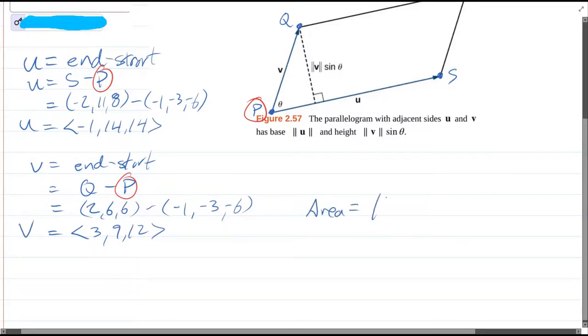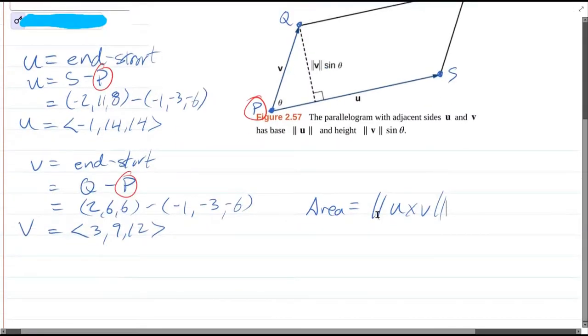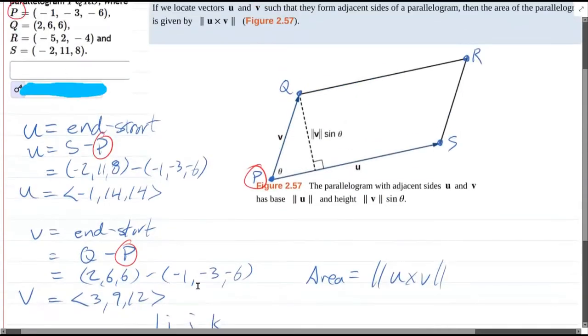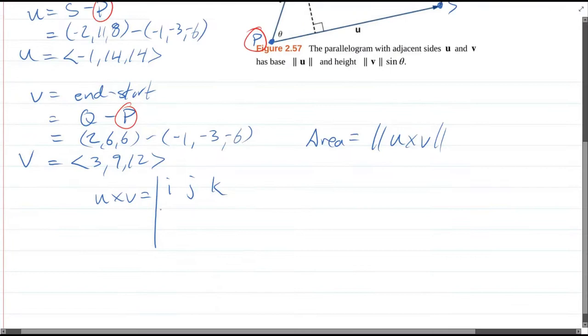Now I have our area formula. So do the cross product first. I like the IJK method. You do not have to use the IJK method. There are other ways to compute it.